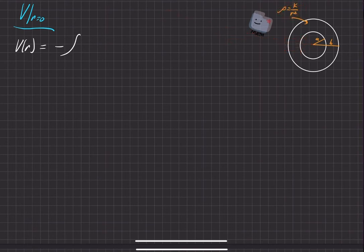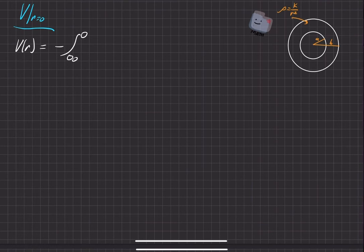So we'll have to break this integral up into three pieces. The general integral is the negative integral from infinity to zero of the electric field dotted with the path that you choose.